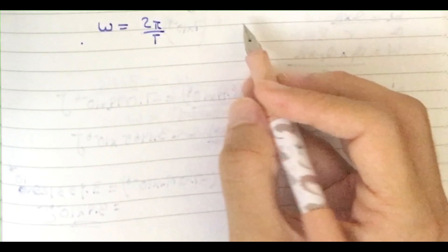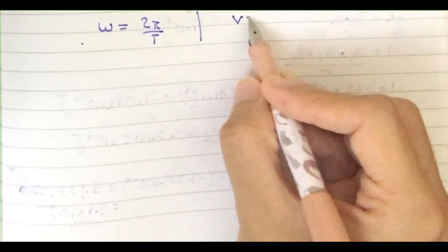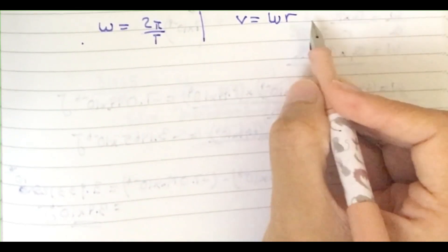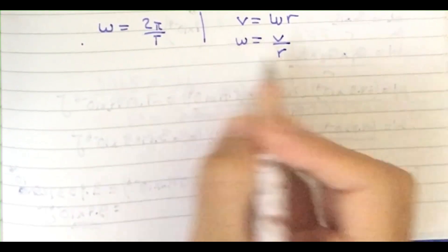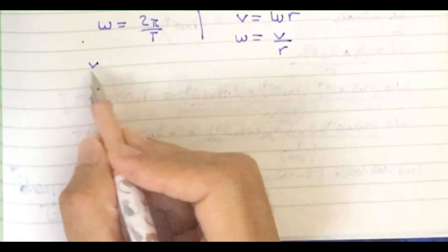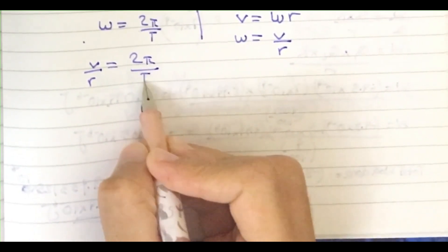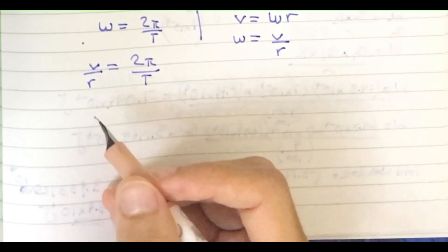I'll convert it to normal velocity. I know that velocity equals ω times radius, so ω = v/r. Substituting this here, we have v/r = 2π/T. From the previous answer, I can see...